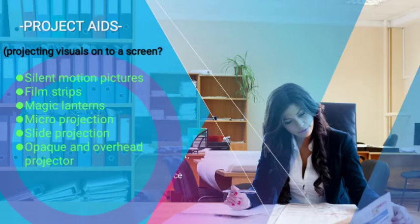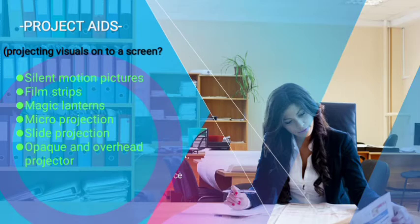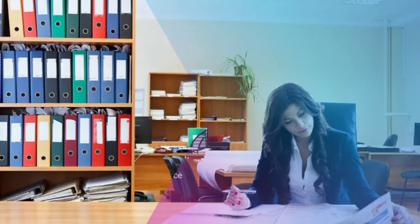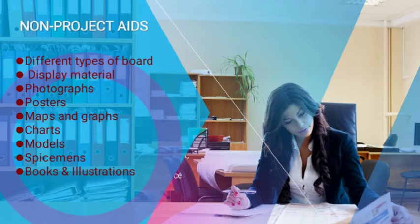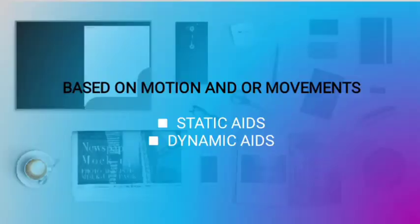Let's explore the classification based on type of projection. Projective aids project visuals onto a screen. The kinds include silent motion pictures, film strips, magic lanterns, micro projection, slide projection, and opaque and overhead projectors. There are also non-projective aids, which include different types of boards, display material, photographs, posters, maps, graphs, charts, models, specimens, books, and illustrations.